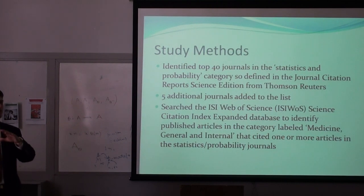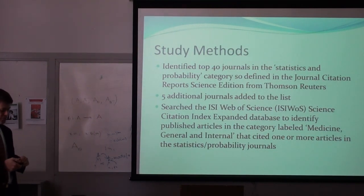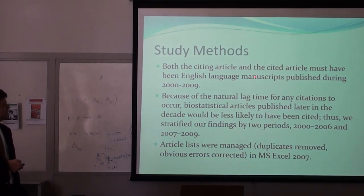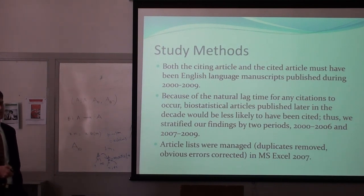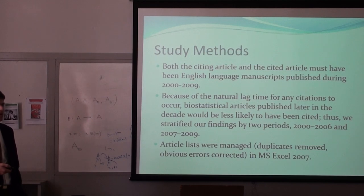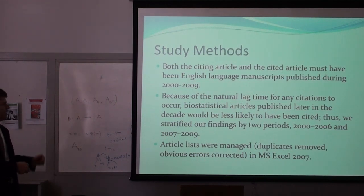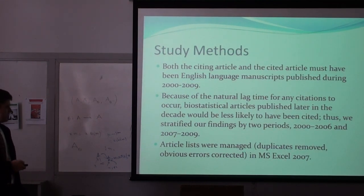I have the statistics journals and the internal medicine journals, and we're looking at the overlap. I wanted to look at recent methods, so both the citing article and the cited article had to be English language manuscripts in this time period — starting in 2010, going back through that decade. I also recognized there's going to be a lag time between when an article is published and when it's actually cited, so I grouped my biostatistics articles by 2000–2006 and separately for 2007–2009. Then we managed all the articles using Excel.